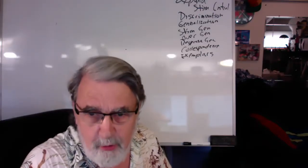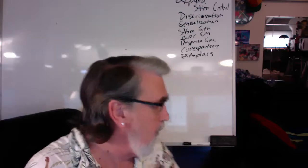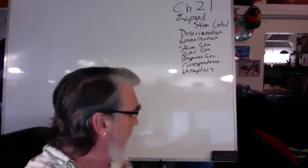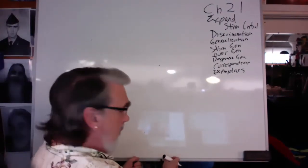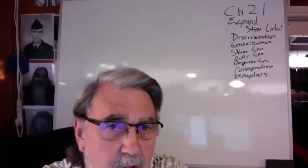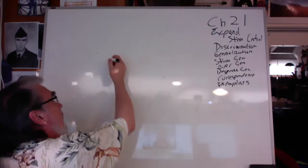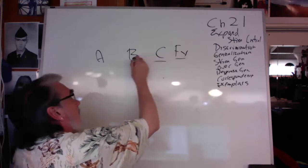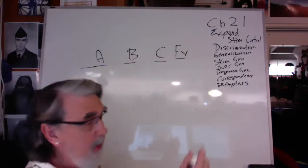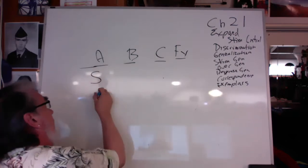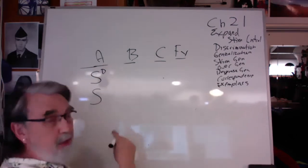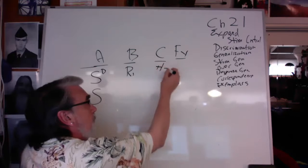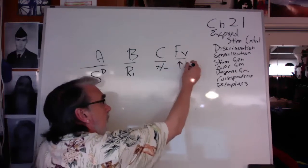For the chapter 21 lecture, we're talking about expanding stimulus control. A quick review: stimulus control involves discrimination. We have the ABCs and we hypothesize the function. In the ABCs we have stimuli, and in order for a stimulus to become a discriminatory stimulus, we have to reinforce that response with some kind of reinforcement — positive or negative — so we can maintain or increase behavior, keep the behavior going.